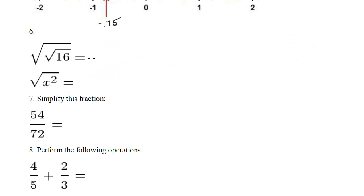Number 6, the square root of 16, well the square root of 16 is just 4, and the square root of 4 is 2. Square root of x squared, well the square root and the square kind of cancel each other out, they're inverse operations, so in some sense you're getting rid of them, so if you're square rooting a square, you get what you started with, in this case x.